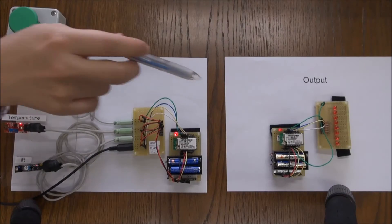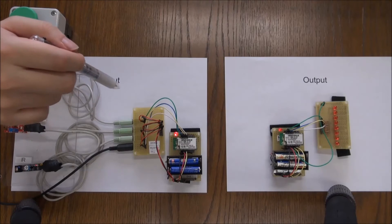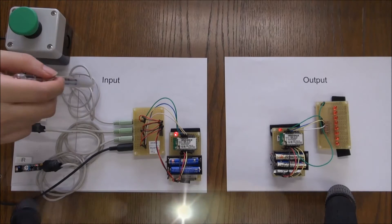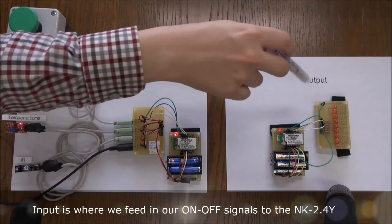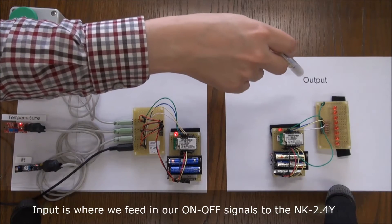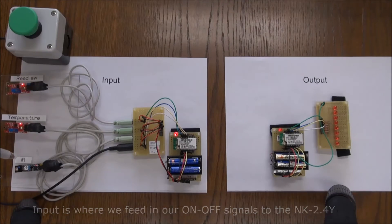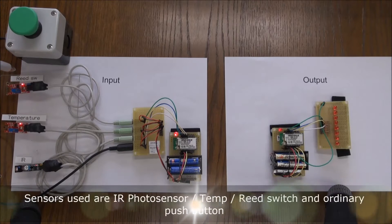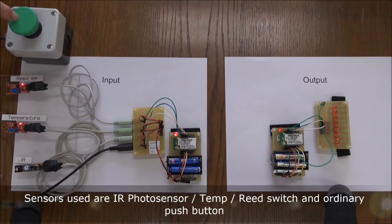I'm going to show a demonstration for the NK2.4Y. We have the input side, we have the output side, and we're using IR temperature and reed switch sensor plus switch.